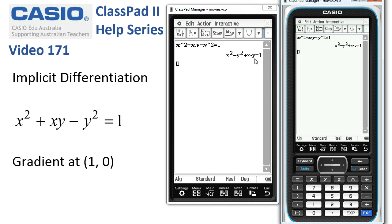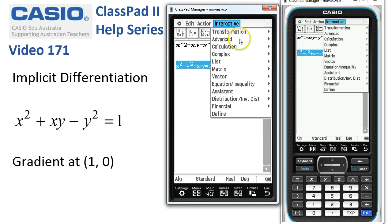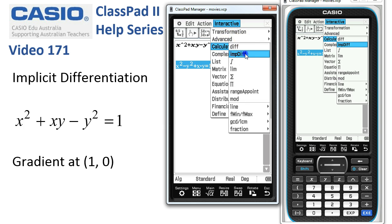Now to implicitly differentiate this function, we'll take a copy of it onto a new line, select it, tap onto interactive calculation and implicit diff.